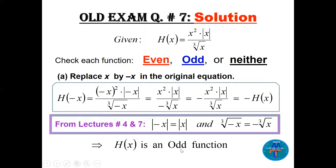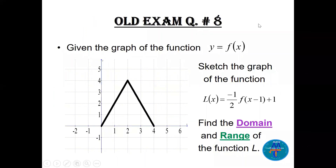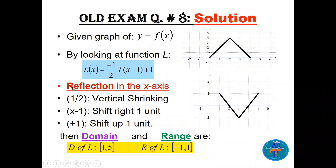Question eight: the graph of y = f(x) is given, and l(x) = −½ f(x − 1) + 1. We sketch it step by step. The minus means reflection in the x-axis — the V-shape from the original graph becomes flipped. The ½ is a vertical shrinking, so the peak that was at −4 becomes −2. Then shift right one unit (x − 1), and shift up one unit (+1 outside). The domain of l is [1, 5] and the range is [−1, 1].